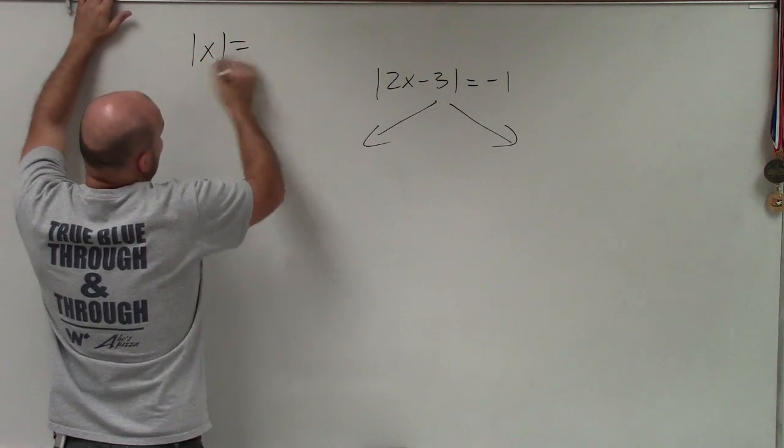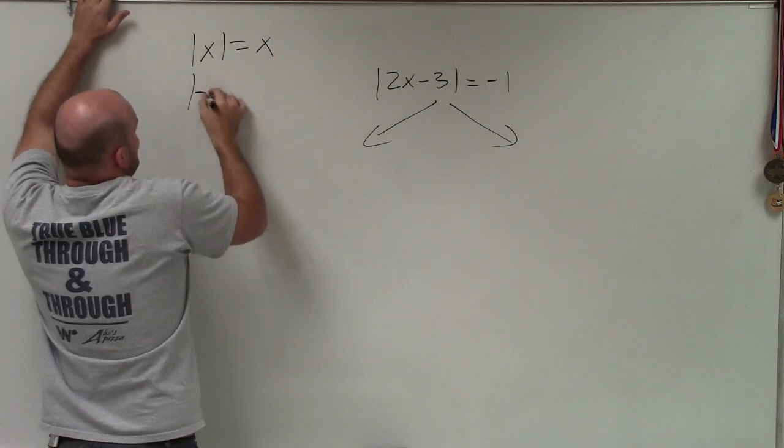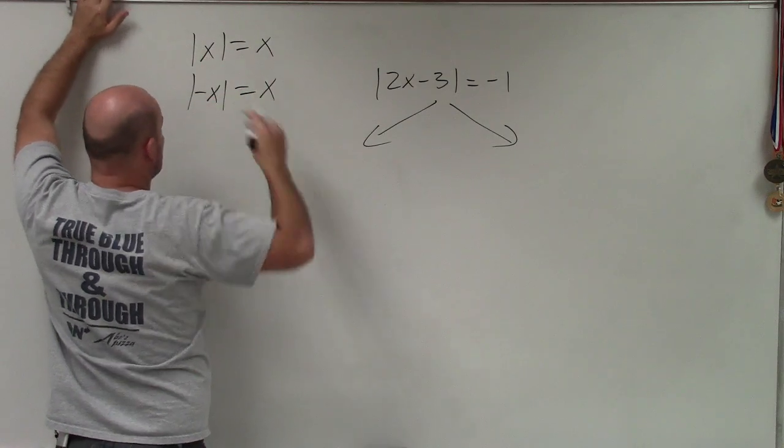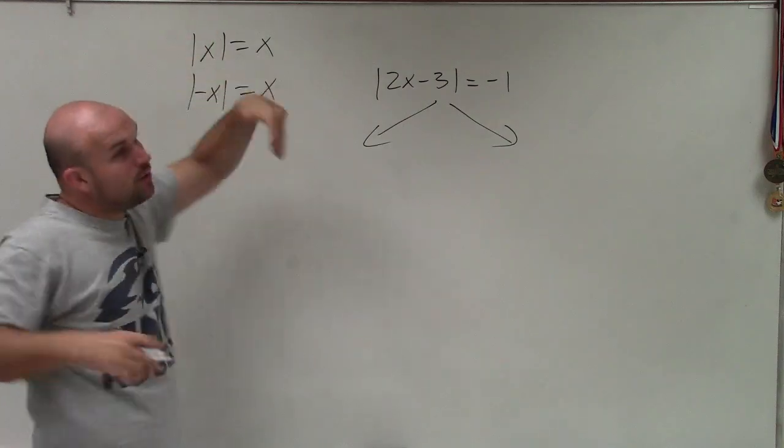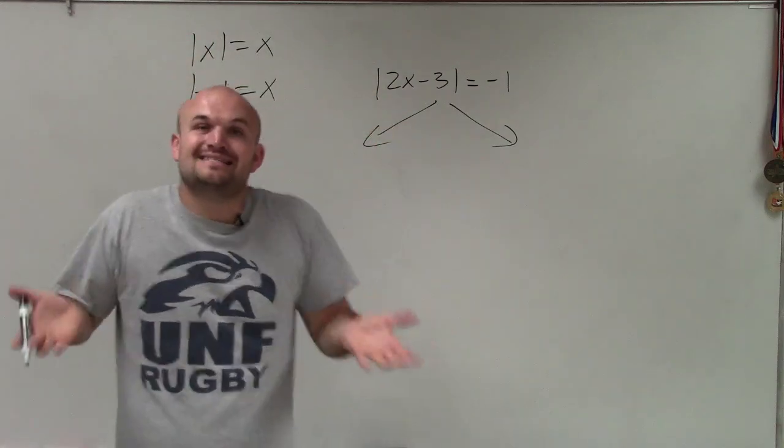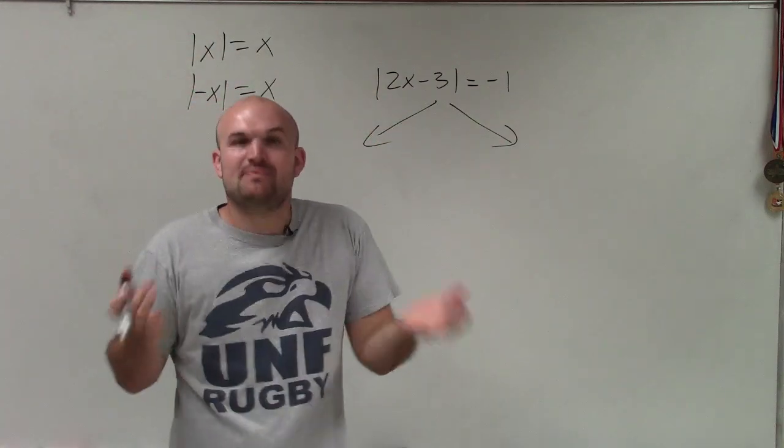Now, when we think about that, absolute value of x is always going to equal x, and the absolute value of negative x is always going to equal x. Well, the important thing to notice is it always equals a positive value, right? That's the absolute value. It's always positive.